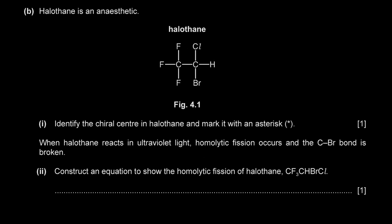Part D: Halothane is an anesthetic. Identify the chiral center in halothane and mark it with an asterisk. The chiral center is the carbon on the right — it is bonded to four different atoms or groups of atoms. A chiral carbon is a carbon atom bonded to four different atoms or groups.